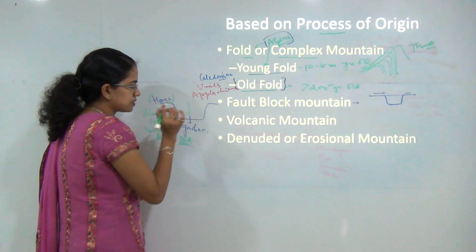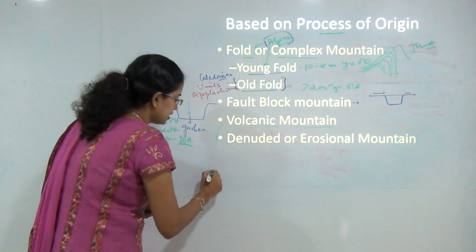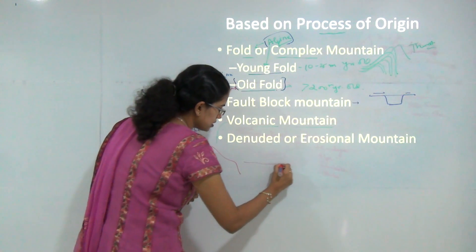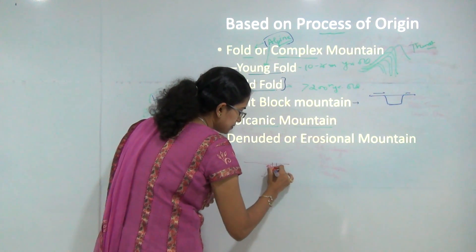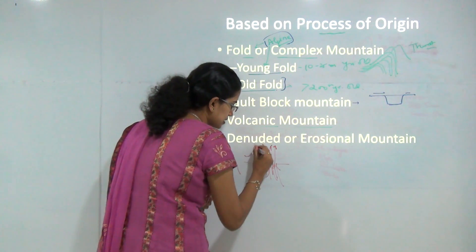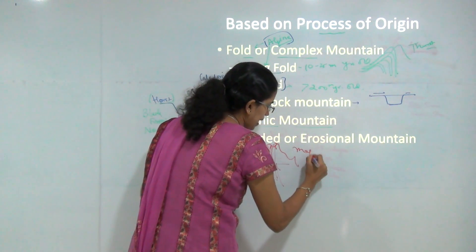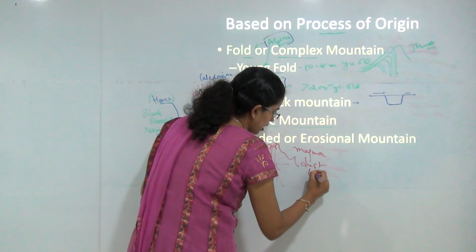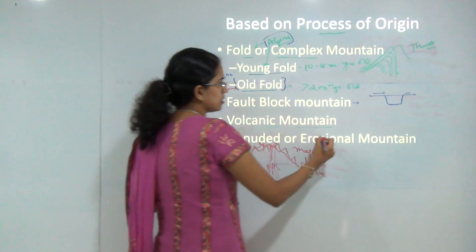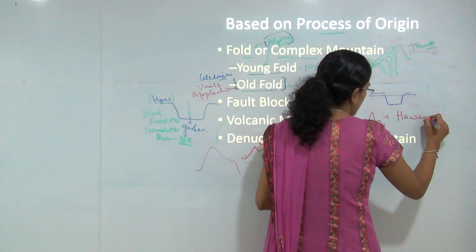Next is the volcanic mountain system. In a volcanic mountain system, lava erupts from the interior of the earth. When hot lava comes out with force, it explodes and deposits magma, dust, and lava material, leading to the formation of volcanic mountain ridges. A classic example would be the Hawaiian mountain ranges, which are formed due to a volcanic mountain system.